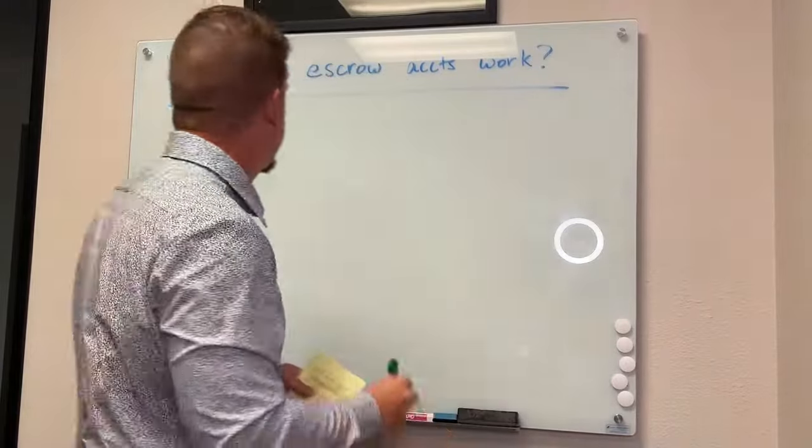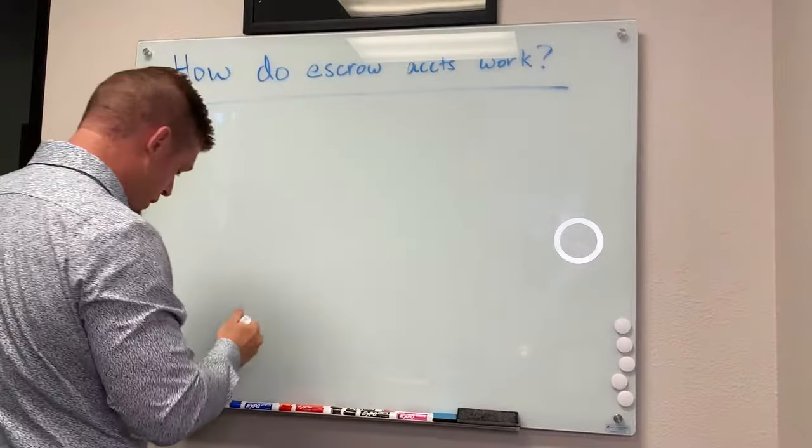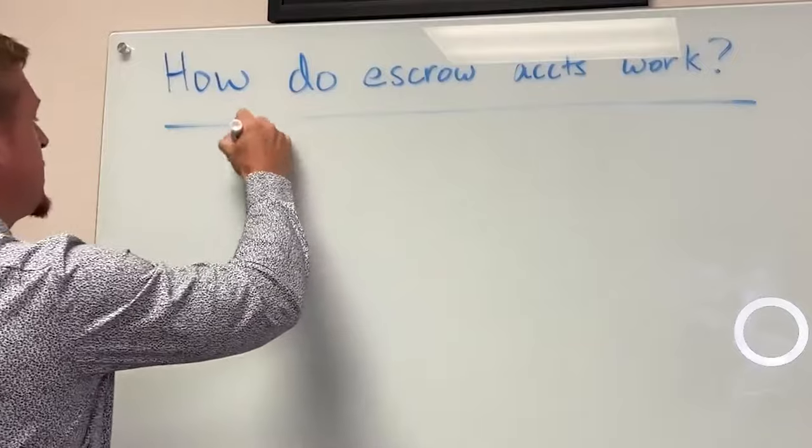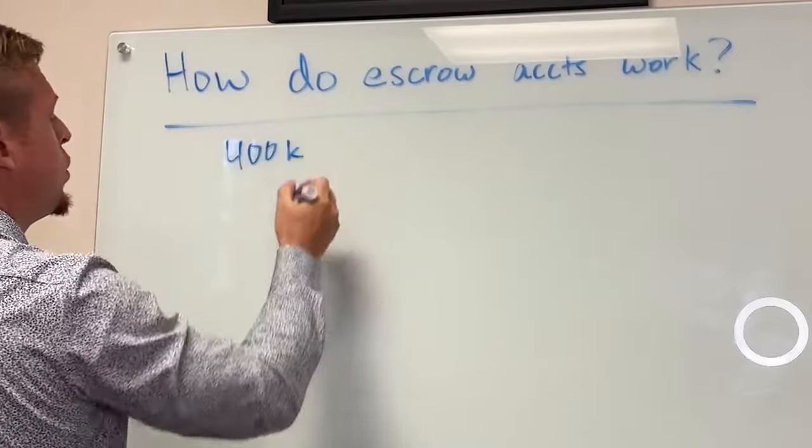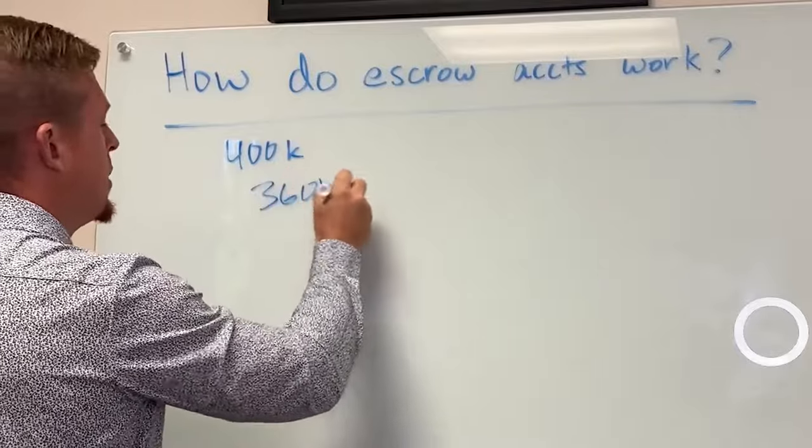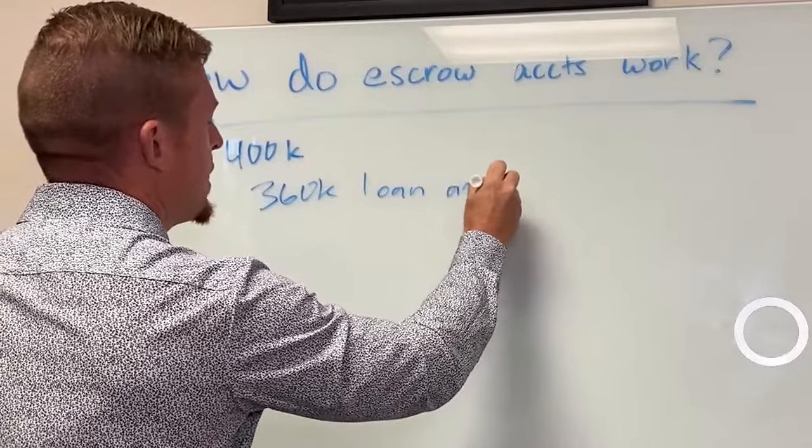So here's a quick example of a $400K purchase. This one's not working too well. All right. So you're buying a house for $400,000. You're putting 10% down. So $360K loan amount. This stuff isn't as important, but just so it's a real life example.